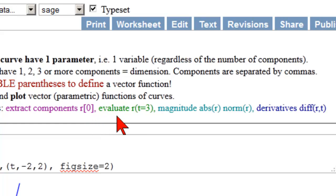We're going to be looking at the command for evaluating, which is our vector function and then parentheses, parameter equal to a number. We're going to be looking at the magnitude commands, absolute value and norm, and the derivative command, diff of the vector function with respect to the parameter. So let's look at those.